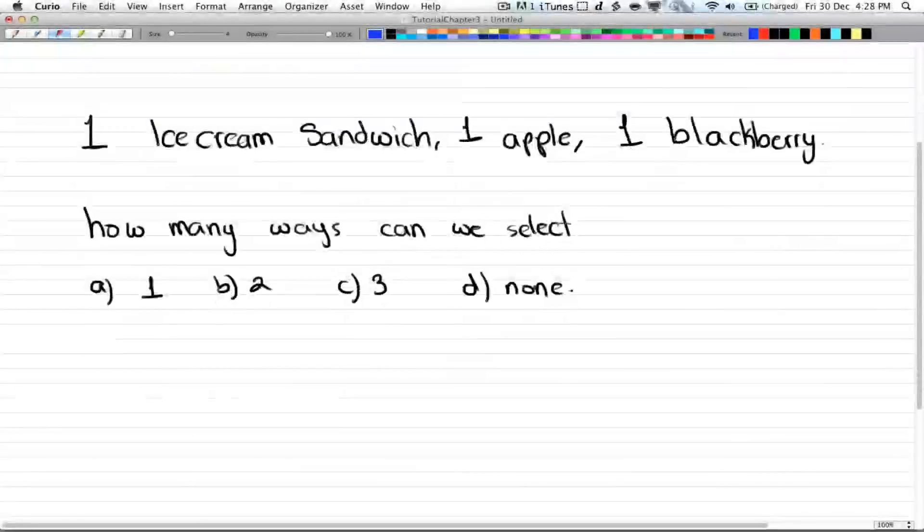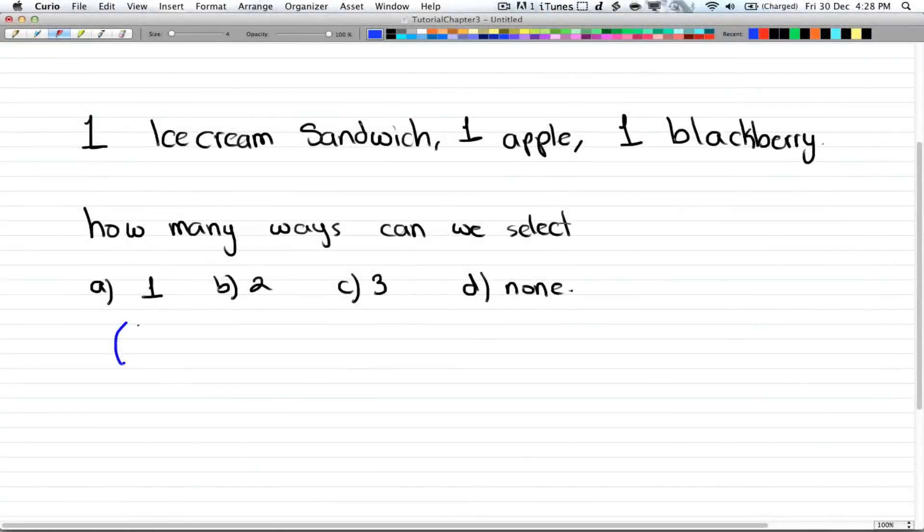Well, the usual way we do this is, for one we have three objects and choose one. For two, three choose two. And three choose three, and three choose zero. This is how we usually do it.